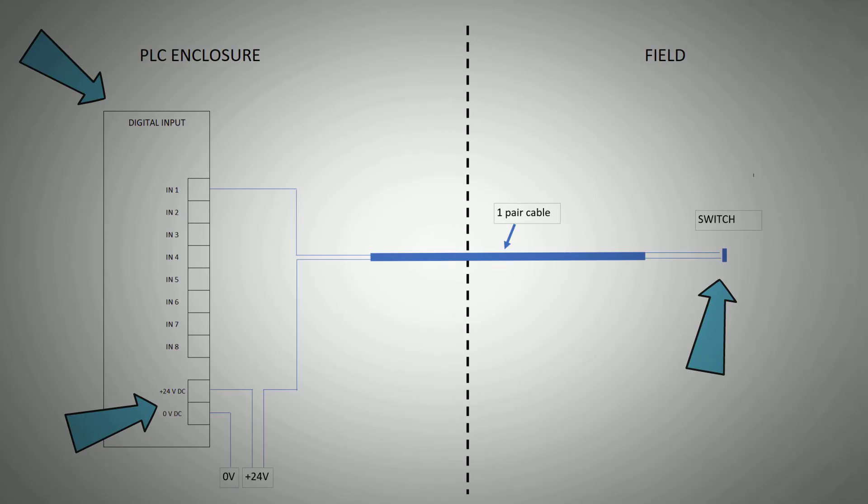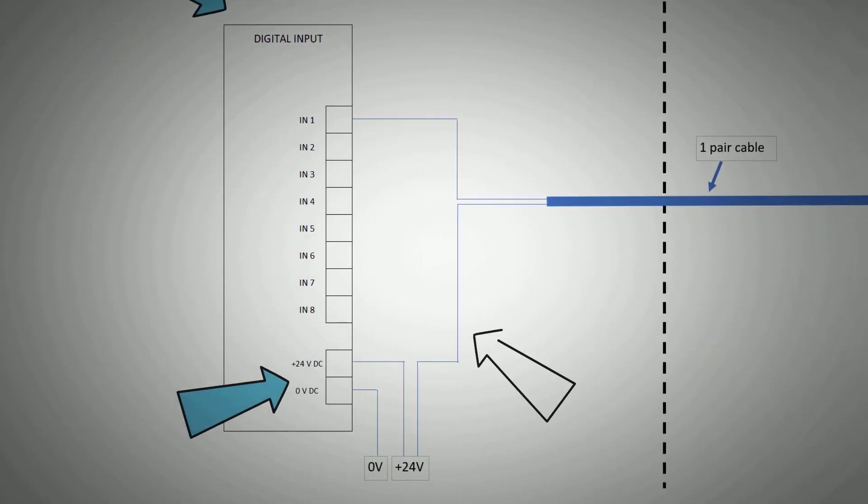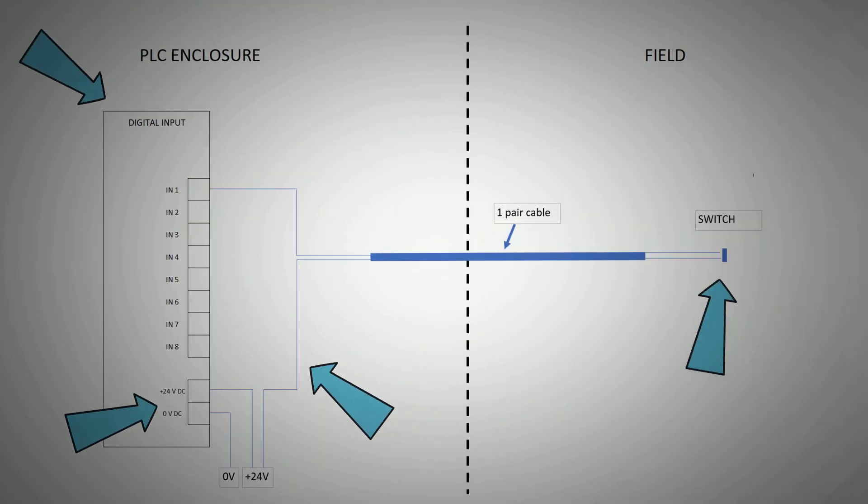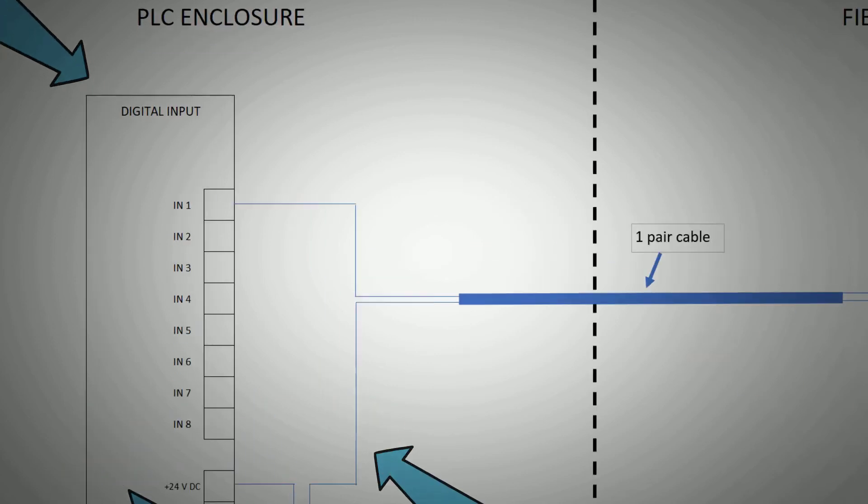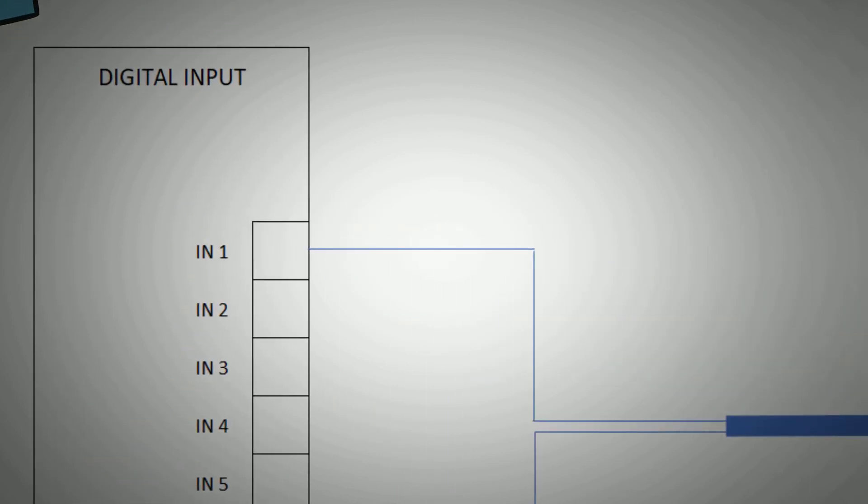We will then run 24 volts from the same source as our digital input card supply down one of the wires, through the device, and back on the other pair and connect through internal patch wiring into our input card.